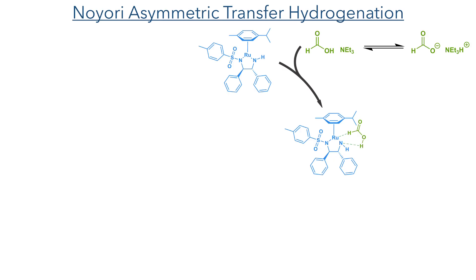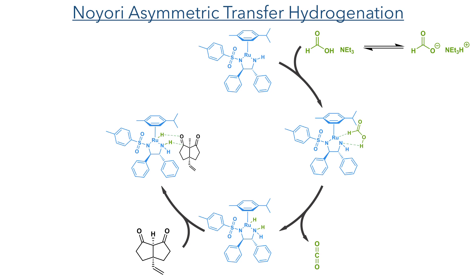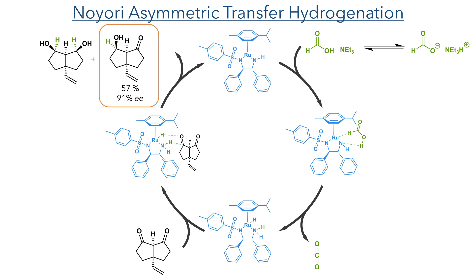To desymmetrize this diketone, they used a Noyori asymmetric transfer hydrogenation. This uses a chiral ruthenium catalyst which first reacts with triethylammonium formate, abstracting an equivalent of hydrogen and eliminating carbon dioxide. This hydrogen adds to the convex side of the diketone, forming the alcohol in a 57% yield with 91% ee. This reaction was quite difficult to achieve, and even with optimised conditions still produced a 37% yield of the over-reduced diol. This could be recycled by re-oxidising it with TEMPO and PIDA to reform the diketone in a 68% yield.